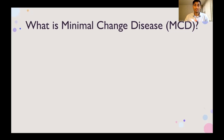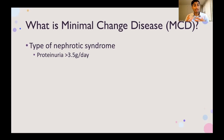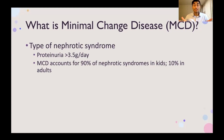So what is minimal change disease, sometimes abbreviated MCD? Minimal change disease is a type of nephrotic syndrome. Nephrotic syndrome is a term used to refer to having large amounts of protein in the urine, normally more than 3.5 grams per day. We also see low albumin levels in the blood, and you can get symptoms like swelling in the legs and other parts of the body. Minimal change disease accounts for 90% of nephrotic syndromes in kids, so primarily this is a pediatric condition. However, it does account for around 10% of cases of nephrotic syndromes in adults — so even for adult nephrotic syndromes, it's important to know how to manage this.